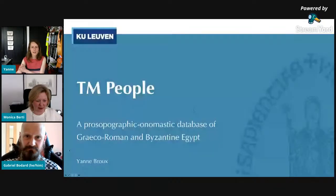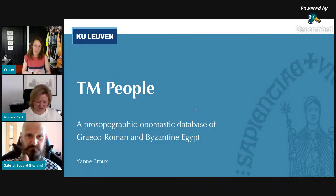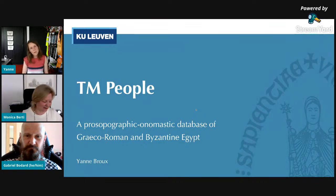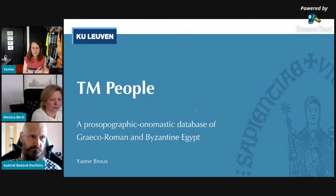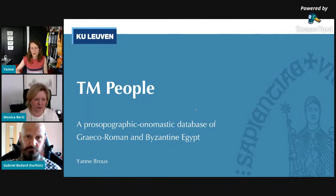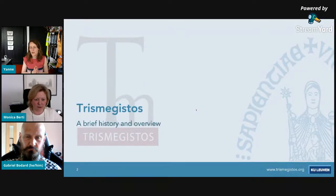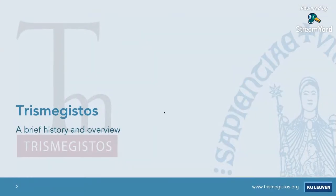Thank you Monica for the nice introduction. I'll be presenting TM People today, which is our prosopographic onomastic database that currently focuses on Greco-Roman and Byzantine Egypt, and it's part of the wider Trismegistos project. I'll be starting with a very short history of Trismegistos itself and a short overview to contextualize the TM People database.